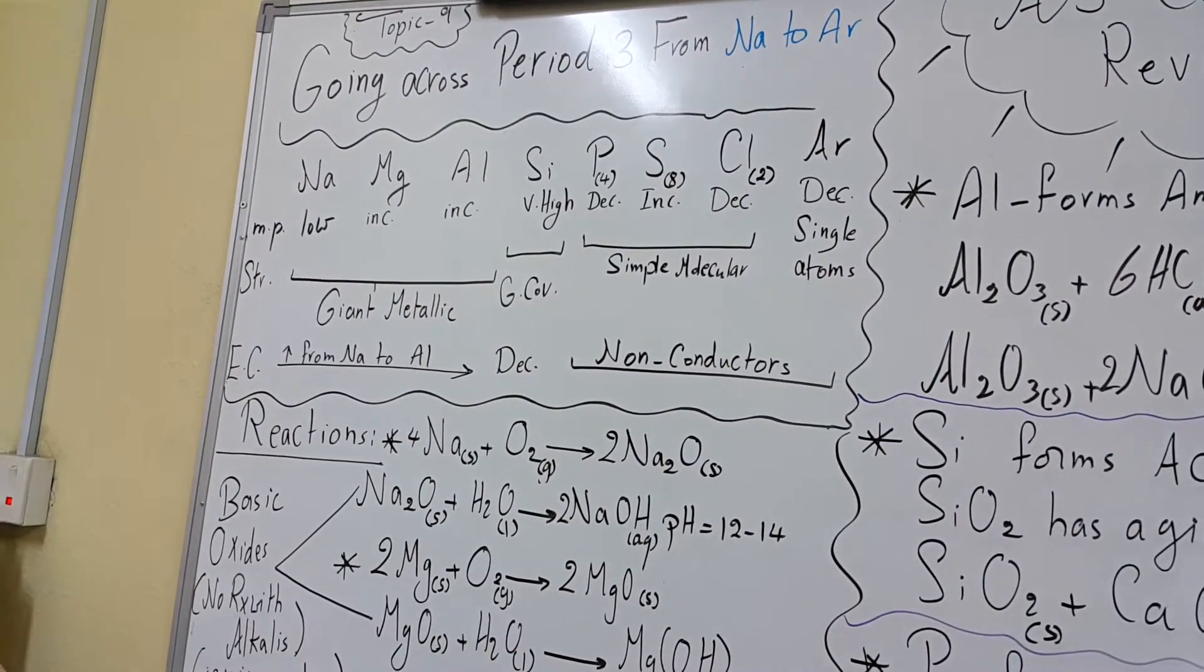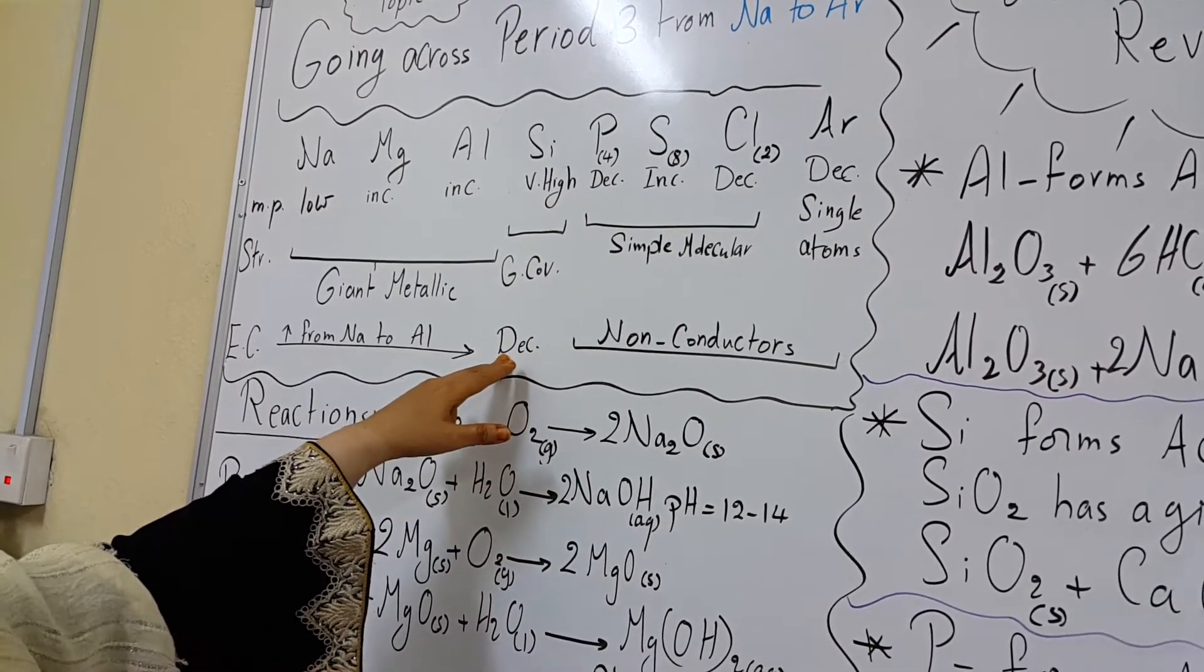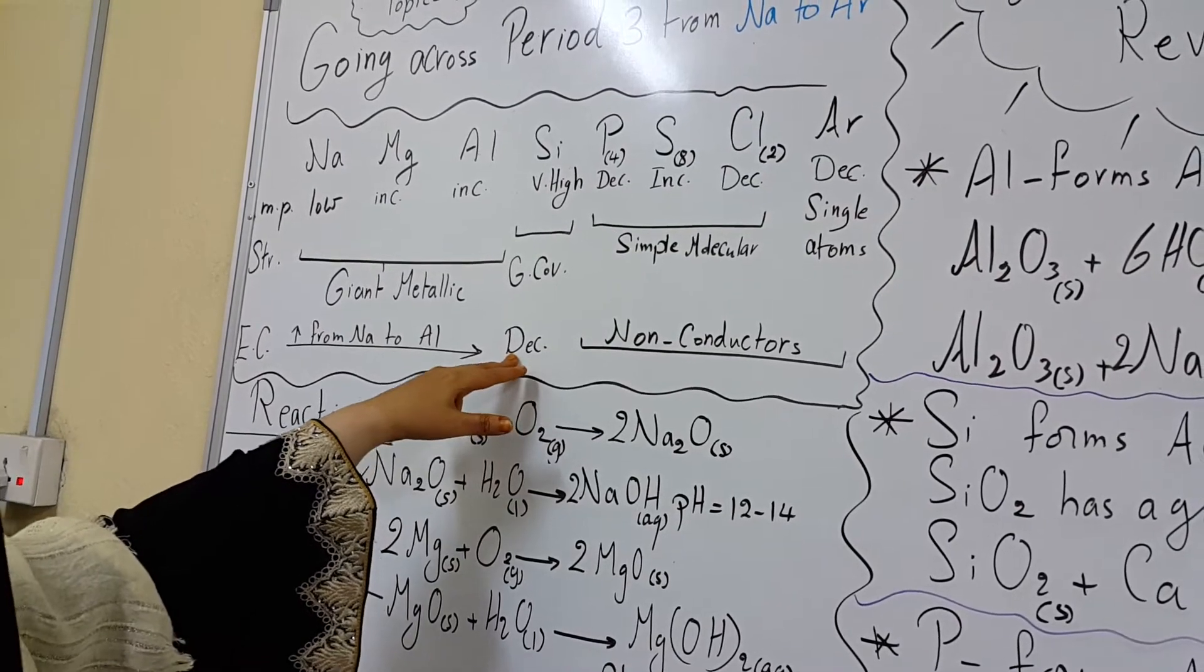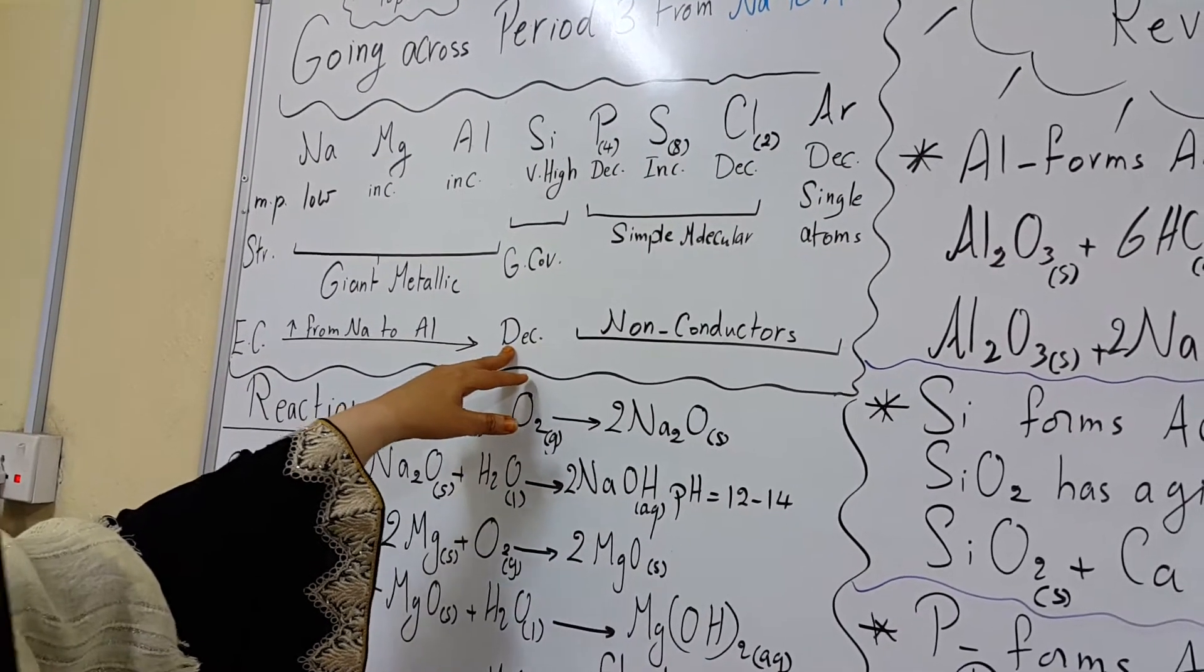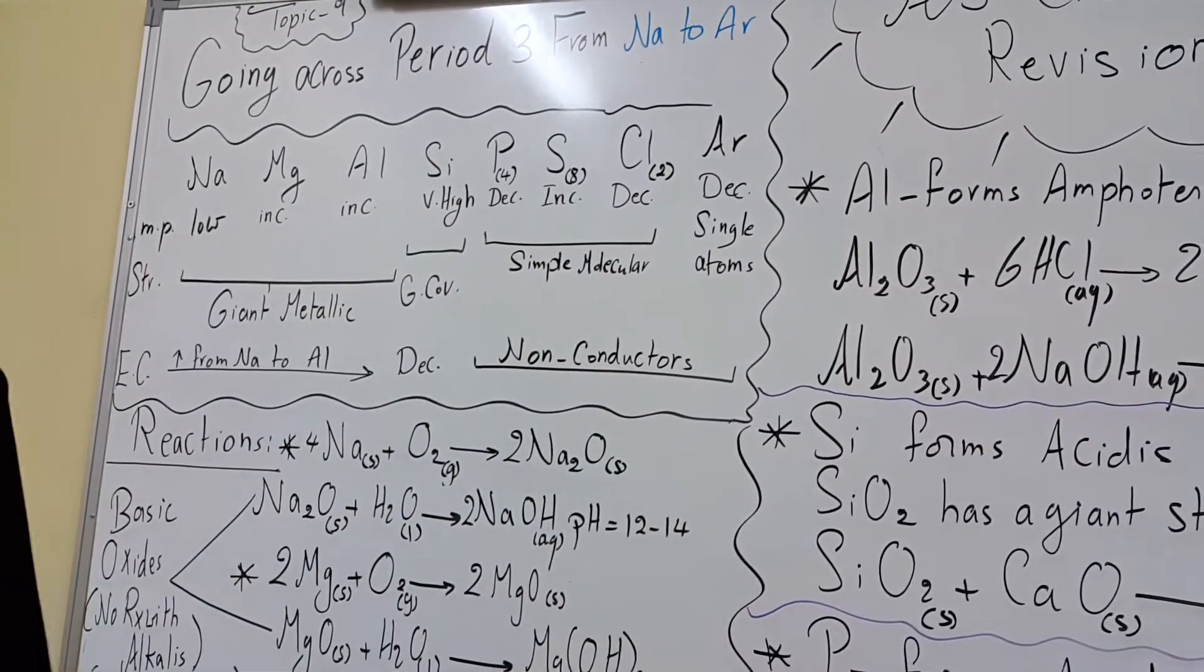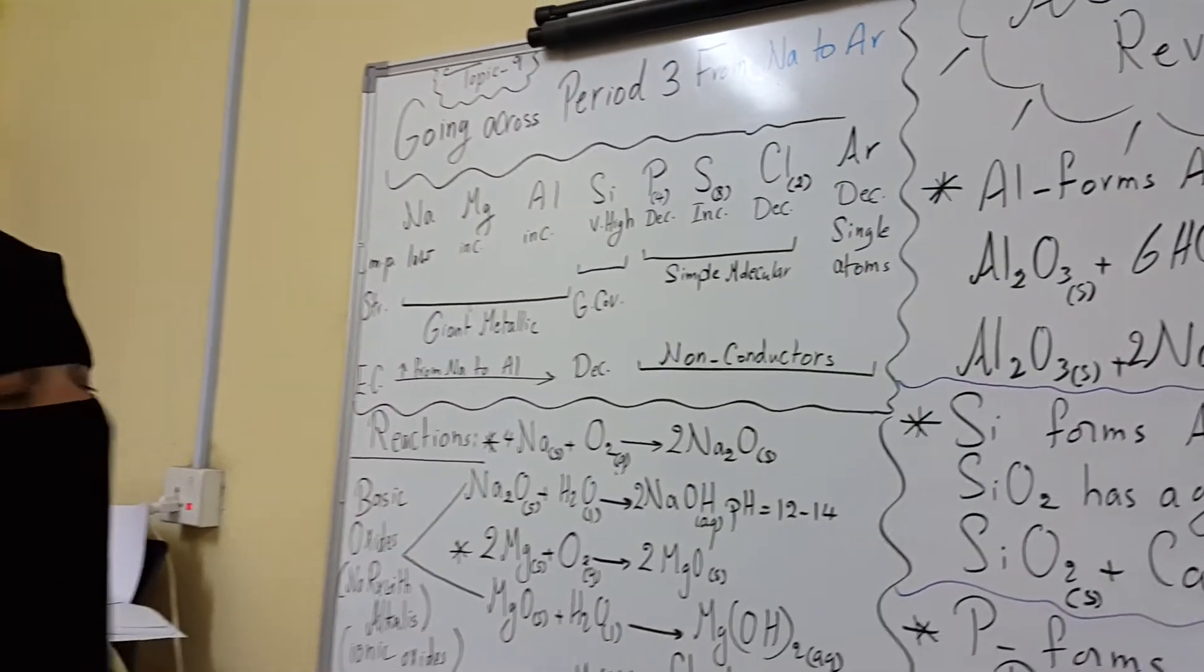Silicon has a giant covalent structure and it doesn't conduct electricity so much, just to a little extent. That's why we mention silicon or we say it is a semi-conductor. Phosphorus, sulfur, chlorine and argon are non-conductors. They don't have any freely moving electrons in their structure.